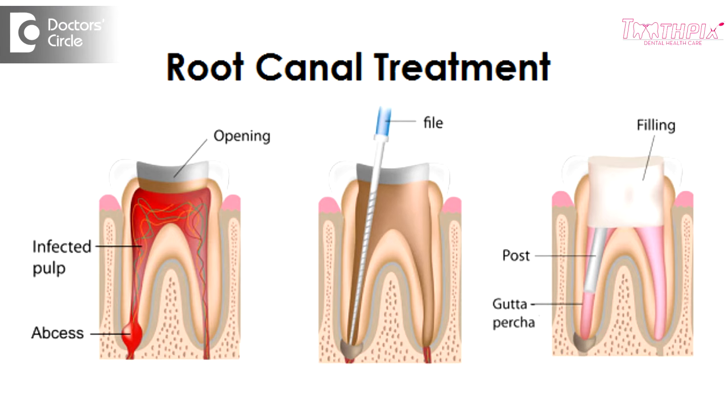First of all we need to understand how do we manage this. When you first visit a dentist, the dentist is going to take an x-ray to understand what exactly the problem is. If the tooth can be saved, then the pus is going to be drained, the abscess is going to be drained, the infection is going to be removed with root canal treatment followed by abscess drainage, then a couple of antibiotics will be given to the patient. After this we would have to reassess the tooth after the symptoms have come down.